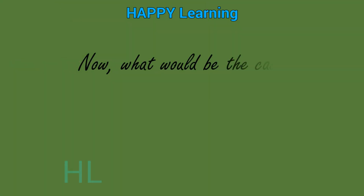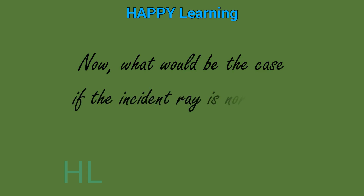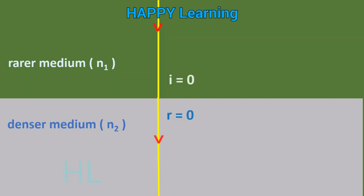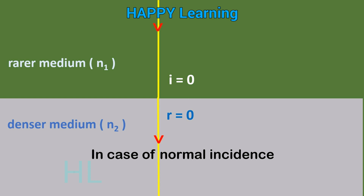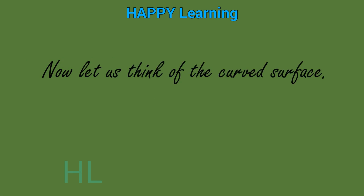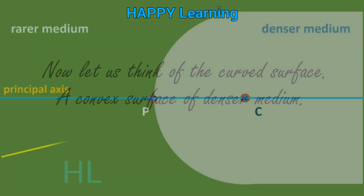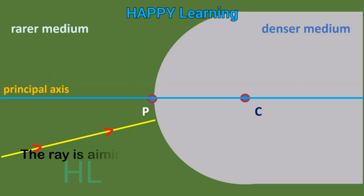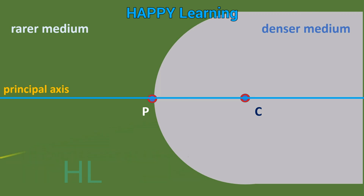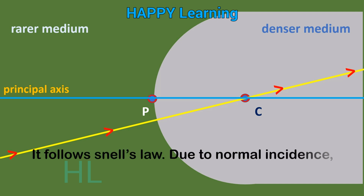What would be the case if the incident ray is normal to the interface of the two media? Here is the light ray incident normally on the interface. In case of normal incidence, the ray travels without any refraction. Now let us think of the curved surface — a convex surface of denser medium. Look at this ray; the ray is aiming towards the center of curvature. The ray continues its straight path along the center of curvature C. It is all due to normal incidence.